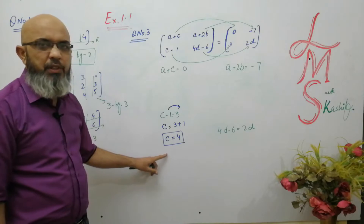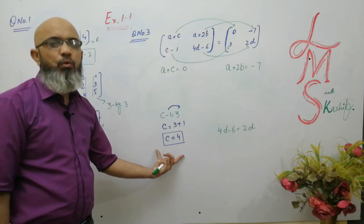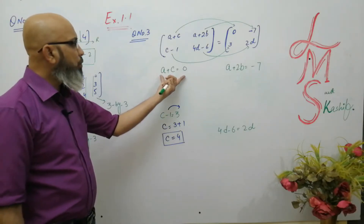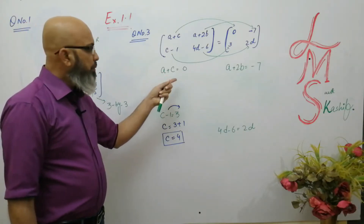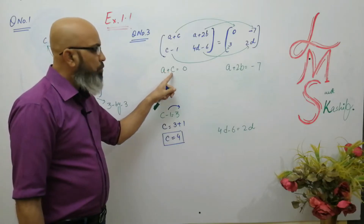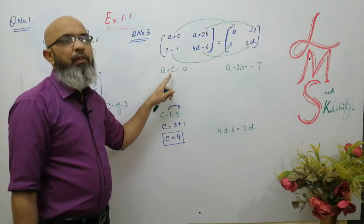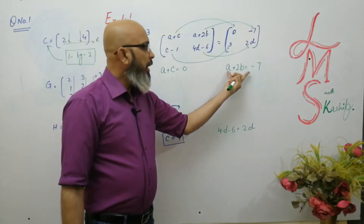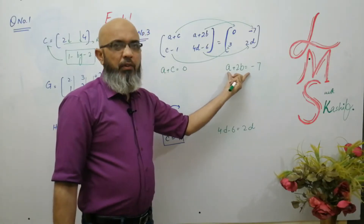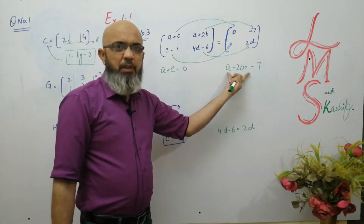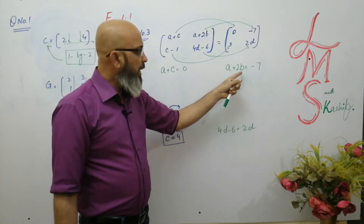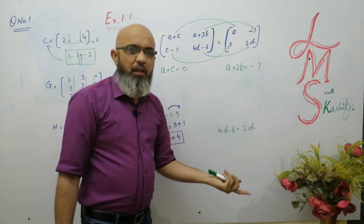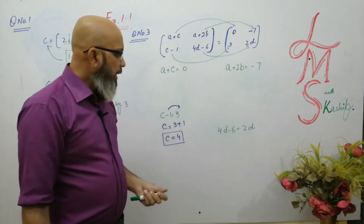Why did we solve c first? Because in the equation a + c = 0, we have two unknown variables. We must have the value of one variable to get the value of the second. Similarly here we have two unknowns, so first we get the value of one, then we get the second answer.